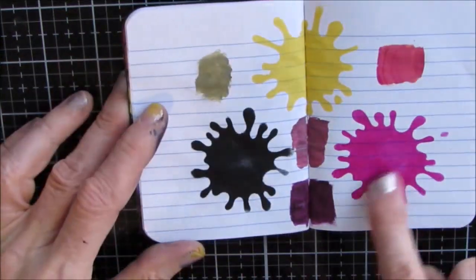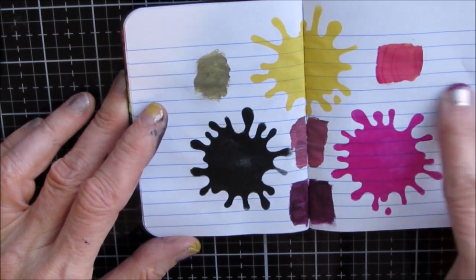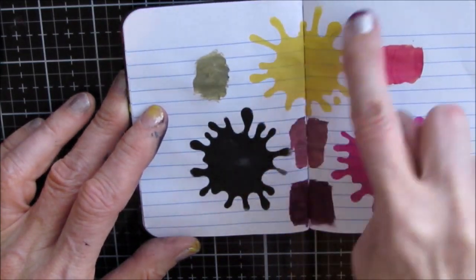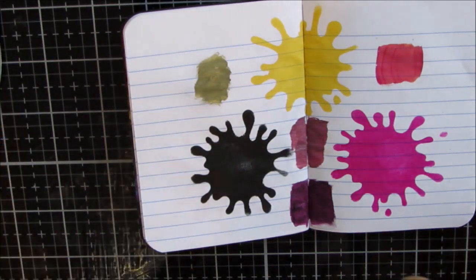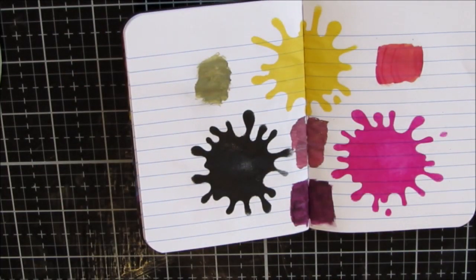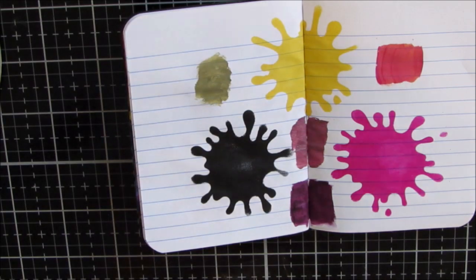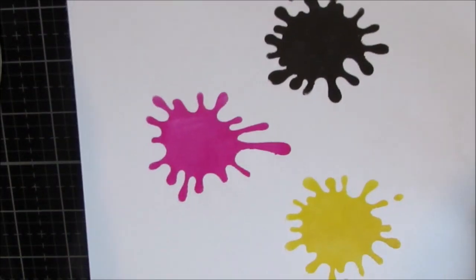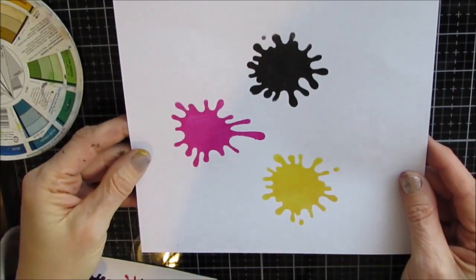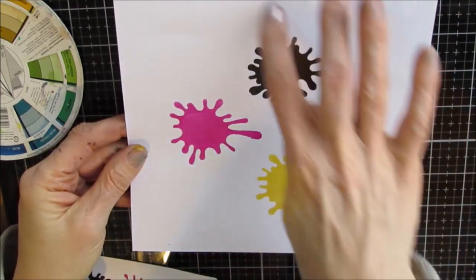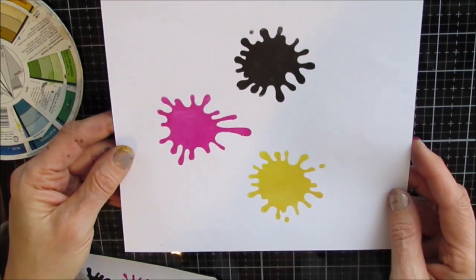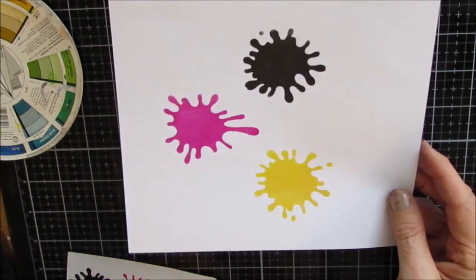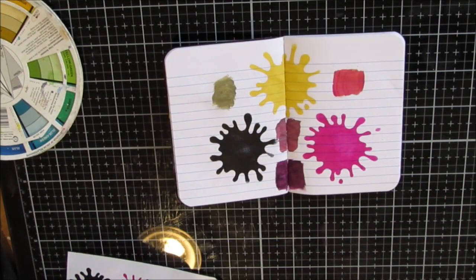You can extend this and mix, take the quinacridone magenta and mix it with white, take the Naples Yellow and mix it with white, do all the mixing, mix it with black, mix it with, you know, if you had a bigger page, if you decided to do it on something like this, you could do the, you know, the black and the white adding to those colors as well. So you decide how much you want to do, but I highly recommend,